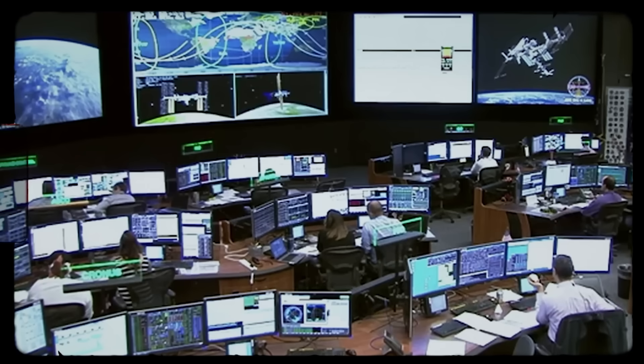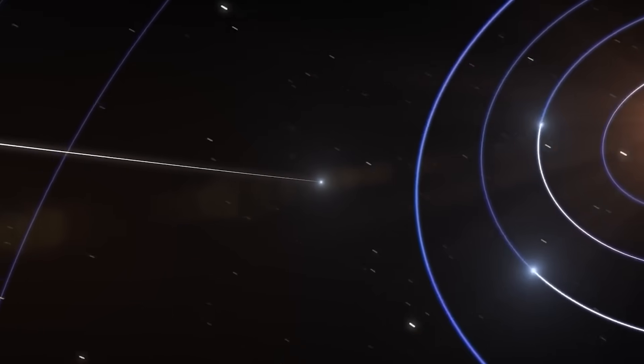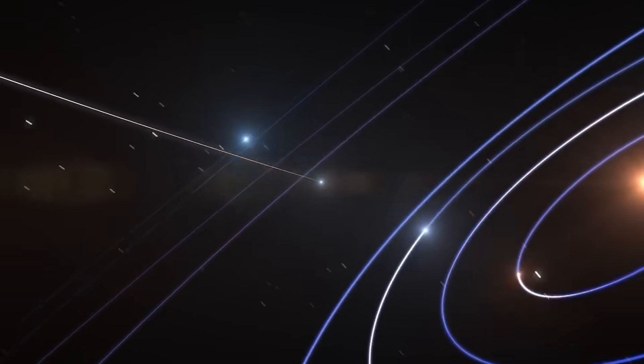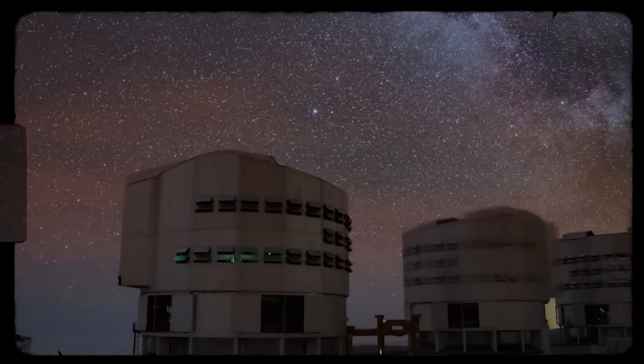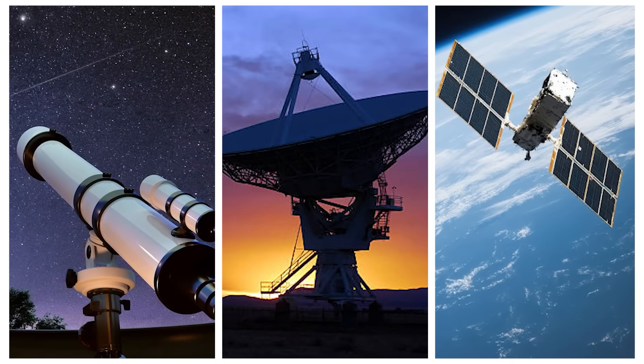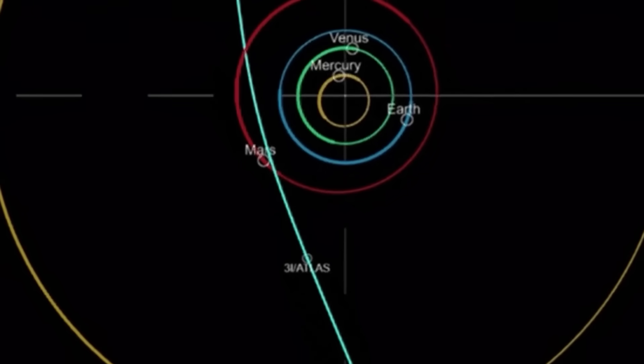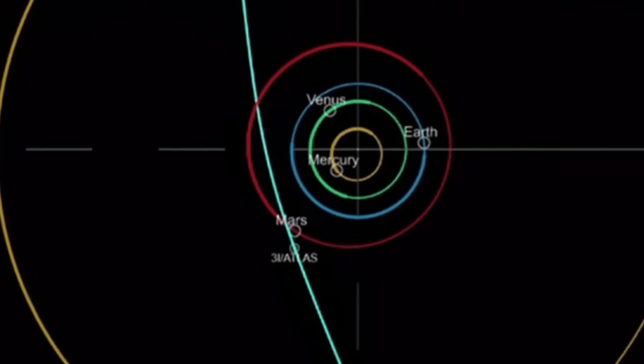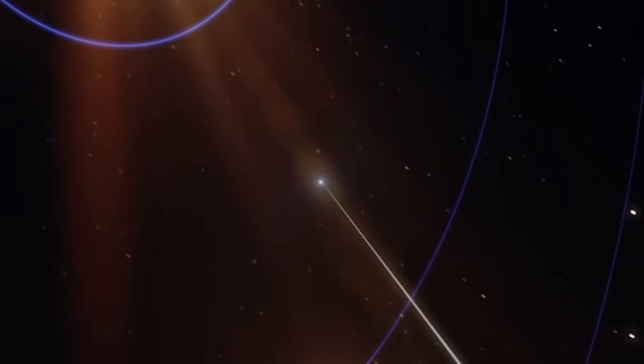But what if this isn't the end of the story? What if 3i/ATLAS is only the opening act in something much larger? A silent message written across the sky, waiting for us to notice. In the weeks following its solar passage, the world's observatories will face a critical moment. Every telescope, radar dish, and satellite will be watching the region of space where the object should reappear. If it comes back exactly where predicted, skeptics will breathe easy. But if it doesn't, if it's off course by even a fraction of a degree, then the conversation changes forever.